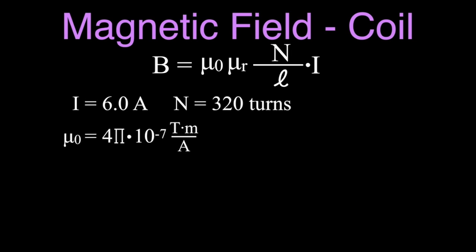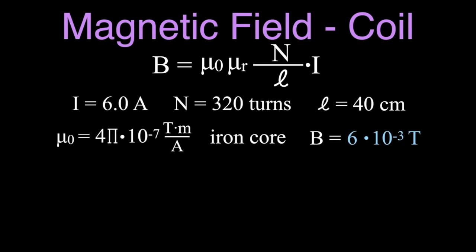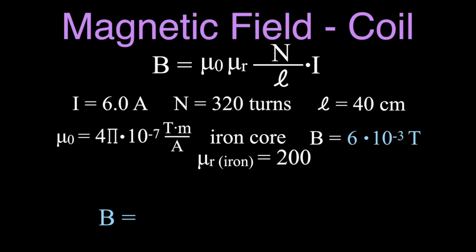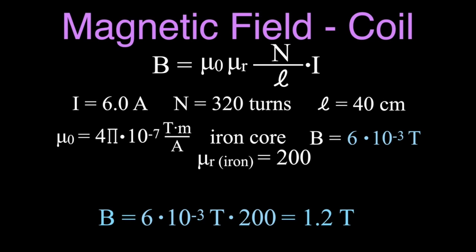Now, we could also put an iron core in there. Using the same equation, we just multiply the previous result by μᵣ. For iron, μᵣ is 200. So we take 6 × 10⁻³ Teslas and multiply by 200, giving us 1.2 Teslas. We've increased the magnetic field strength by a factor of 200, giving us 1.2 Teslas.